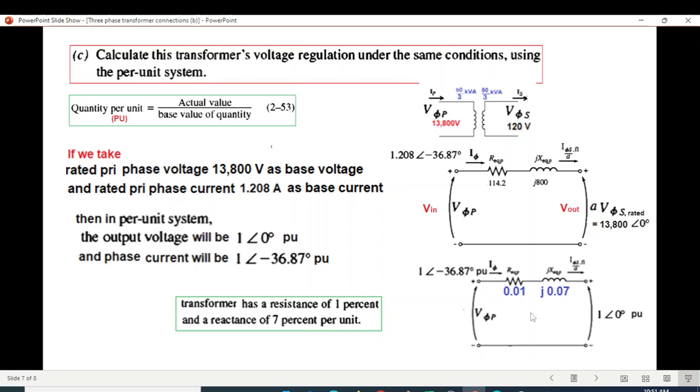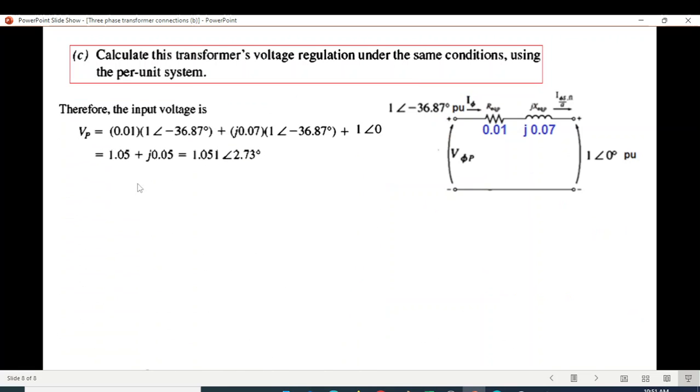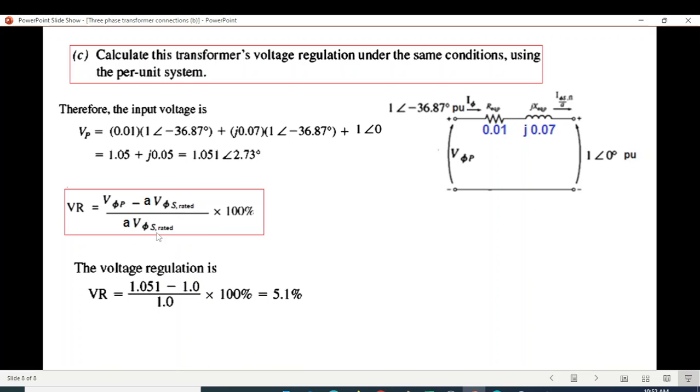Again by writing KVL, V phase P. So V phase P: current multiplied by resistance, reactance multiplied by current, plus this voltage. We get VP: 1.051 angle 2.73 in pu. Now voltage regulation formula, same formula. We use the value in pu. V phase P is 1.051. So where it is, we write 1.05. Where A V is, we write magnitude 1 divided by 1. So here we get the answer: 5.1%, exactly the same answer that we calculated in part B.